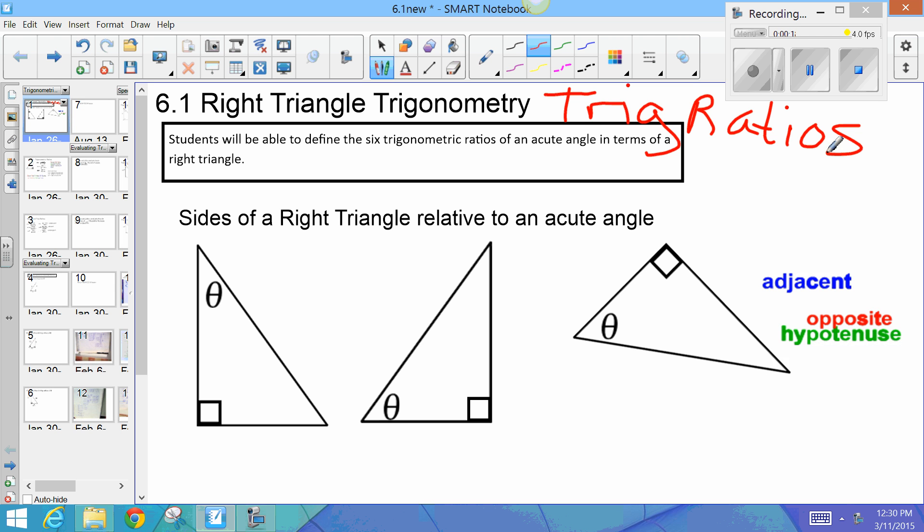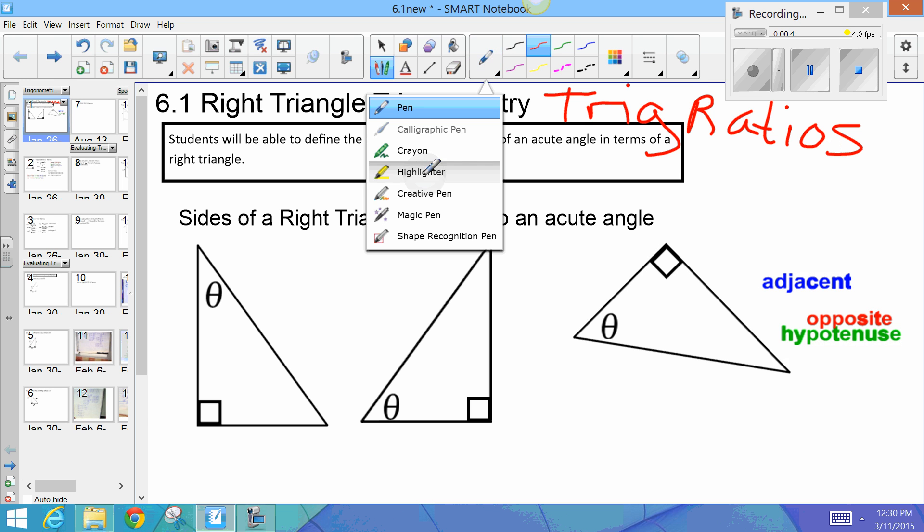Okay, so the first thing we have to know is we have to be able to determine the names for the sides of a right triangle. And the names are always relevant. They're relative, is actually the correct word, to an angle.